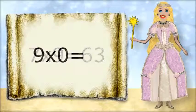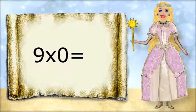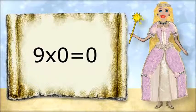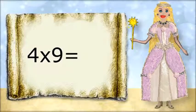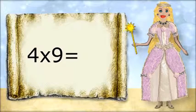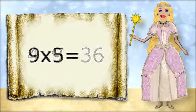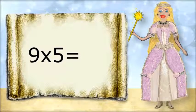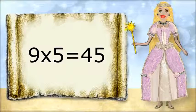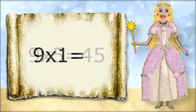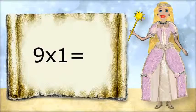9 times 0 equals 0. 4 times 9 equals 36. 9 times 5 equals 45. 9 times 1 equals 9.